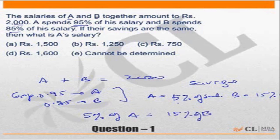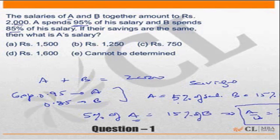In other words, the salary of A should be 3 times that of B. You can also look at it this way: A upon B is equal to 3 upon 1. While mathematics is the way it is to be done, when you read the equation, you should be able to connect directly that 5 percent of A is equal to 15 percent of B, and the ratio of salaries is 3 to 1.